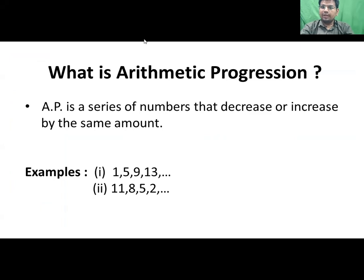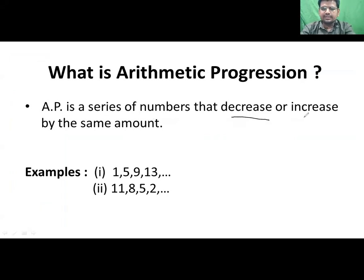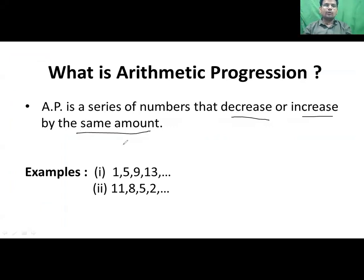Let us see the definition of Arithmetic Progression. AP is a series of numbers that decrease or increase by the same amount. Let us look at two examples to understand the meaning of increasing and decreasing by the same amount.